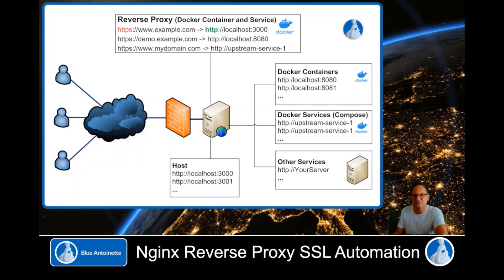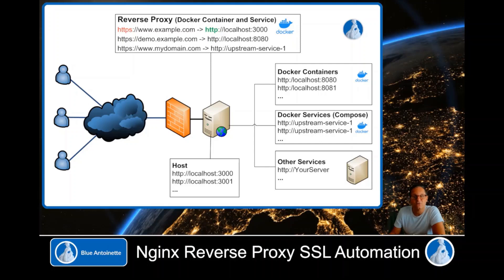We just released this full automation as a new product, so you either can purchase it at the link down below in the description, or you can watch this video until the end and build it yourself. The product comes as a Docker image with several scripts. It allows you to pass requests to your services that either can run on your host, in your Docker containers, on your Docker Compose services, or even on other servers.